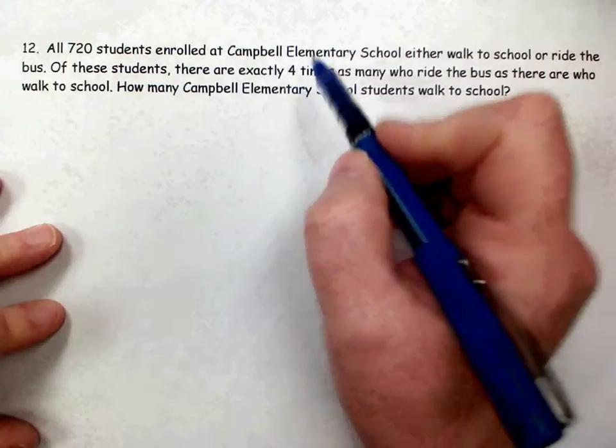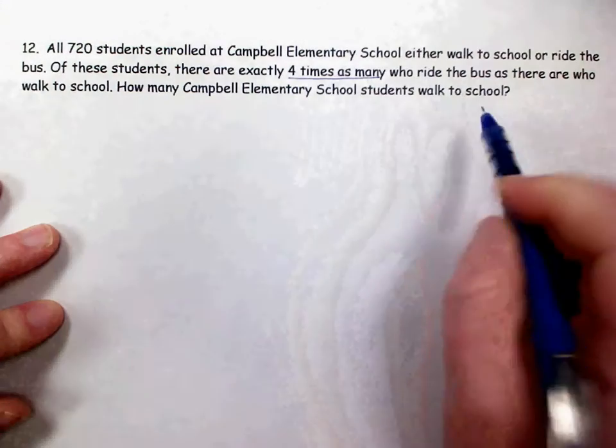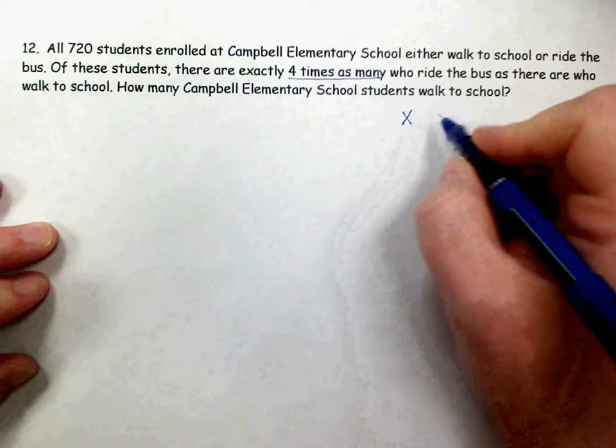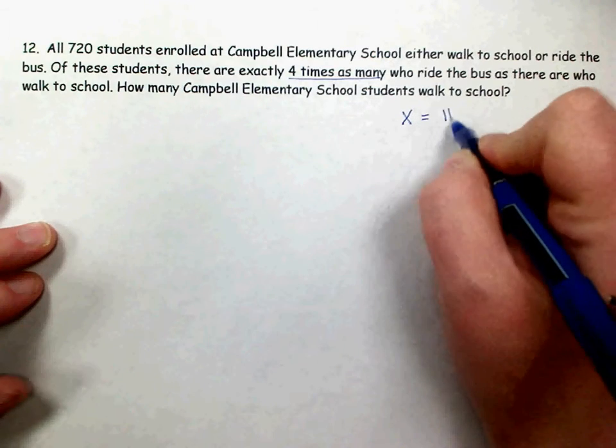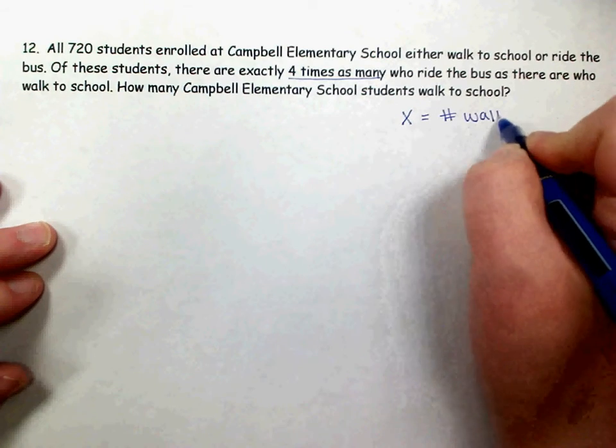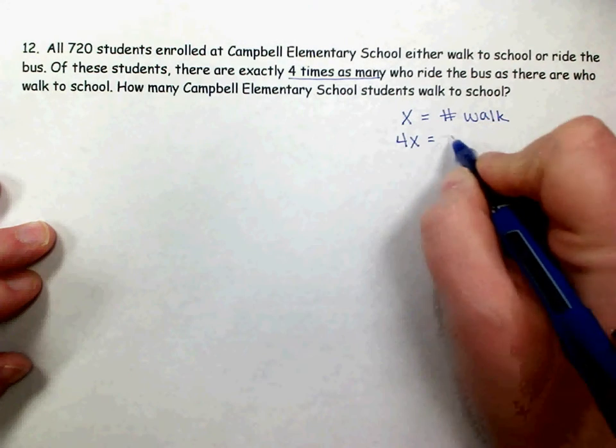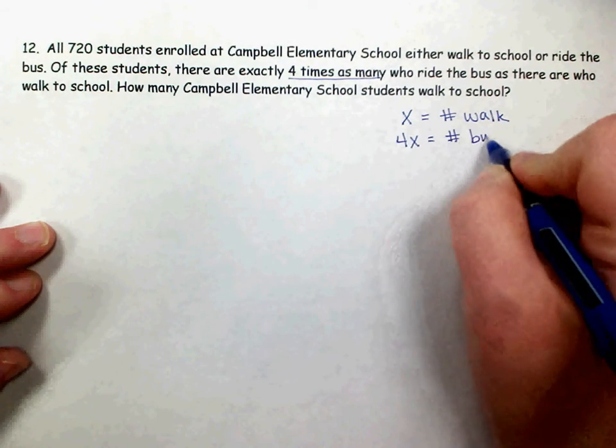So since there's four times as many who ride the bus as there are who walk, I'm going to let x, my variable, be the number of students who walk. So all I have to do is multiply that by four to represent the number of students that ride the bus.